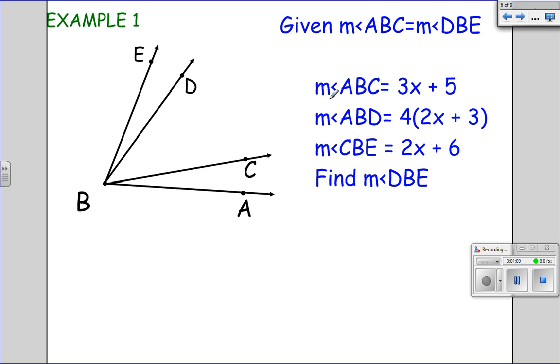So if you look at what's given here, measure of angle ABC is the small piece. ABD is the bigger piece and CBE is the bigger piece as well. We know that the two bigger angles will be equal to each other because of the common angle theorem. So measure of angle ABD equals the measure of angle CBE.